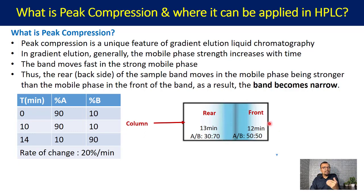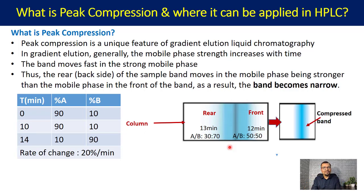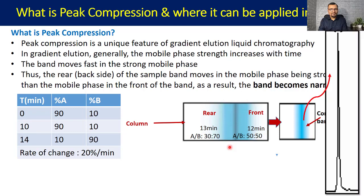We also learned that the band moves faster in a stronger mobile phase. Since the rear band is experiencing a stronger mobile phase, we can expect this rear band to start moving faster compared to the front-end band. As the two ends of the band come closer to each other, the peak becomes sharper — the band has been compressed because the rear band moved faster due to the stronger mobile phase. This is called peak compression.